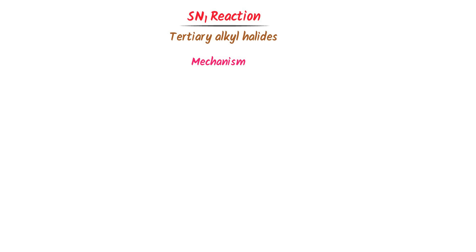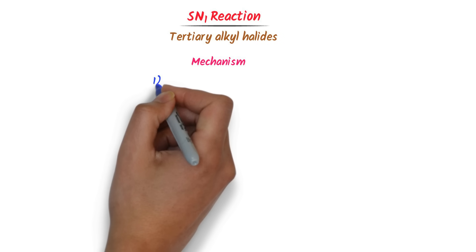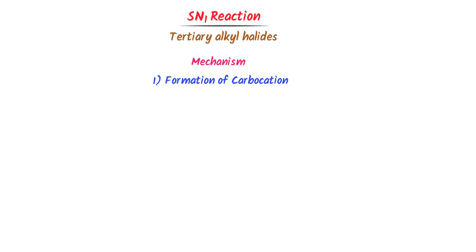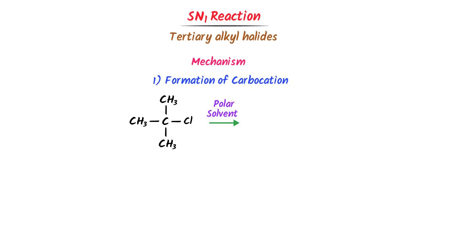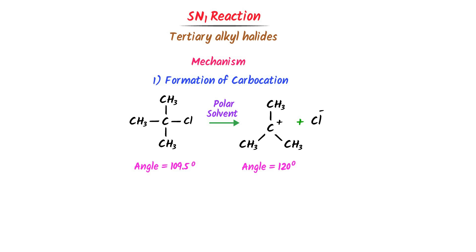Now what about the mechanism of SN1 reaction? SN1 reaction occurs in two steps. In the first step, formation of a carbocation. I take a tertiary alkyl halide. Now I add a polar solvent to it, due to which this molecule gets polarized — this halogen becomes a nucleophile and this becomes a carbocation. Here the bond angle between carbon atoms is 109.5 degrees, while in the carbocation it is 120 degrees. Remember that the first step is a slow step, hence the carbocation is formed in the first step.